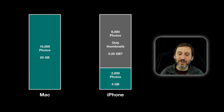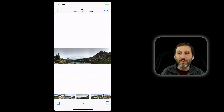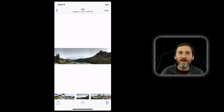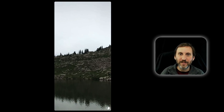So instead of taking up 20 gigabytes, it's now taking up about 4 gigabytes, yet it looks like you still have all 10,000 photos. When you go to view a photo that isn't stored at full resolution on your iPhone, you'll get the thumbnail version. If you zoom in, it needs the higher resolution version and will try to download it — you'll see a little circle at the bottom fill up as it downloads. Once complete, you can see the full resolution.